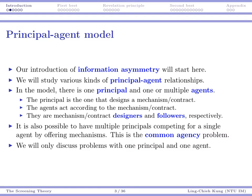Sometimes we may have multiple principals competing for a single agent. For example, if there is a very strong retailer willing to sell products from only one manufacturer, then multiple manufacturers may need to compete for the agent's collaboration. This is called the common agency problem — it is very complicated, so we will not talk about it in this course.